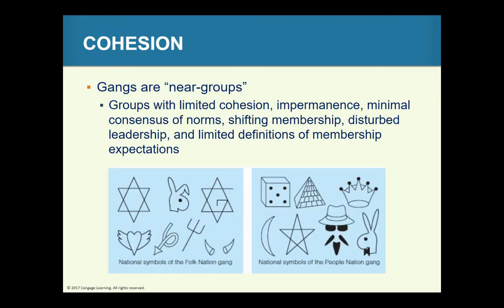When talking about cohesiveness, experts refer to gangs as 'near groups' — there's limited cohesion and impermanence, minimal consensus of norms, shifting membership, disturbed leadership, and limited definitions of membership expectations. Some gangs have pockets of members who are more structured and organized — it really just depends. You can see visuals on the slide showing different signs for these different gangs.